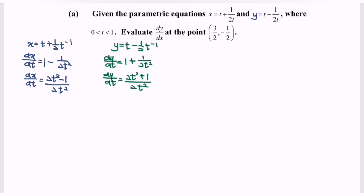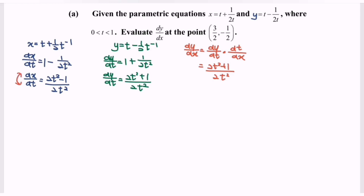Next, find dy/dx. dy/dx equals dy/dt multiplied with dt/dx, which gives 2t squared plus 1 over 2t squared, divided by 2t squared minus 1 over 2t squared. Simplifying, dy/dx equals 2t squared plus 1 over 2t squared minus 1.